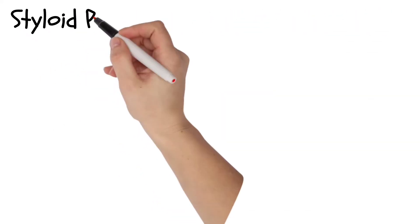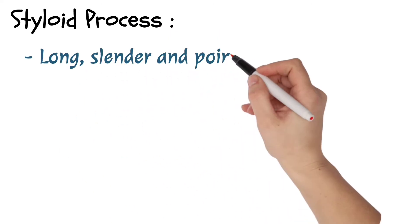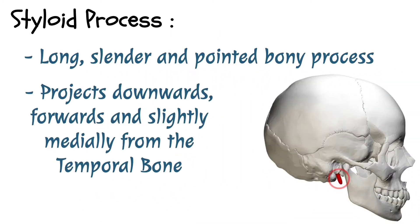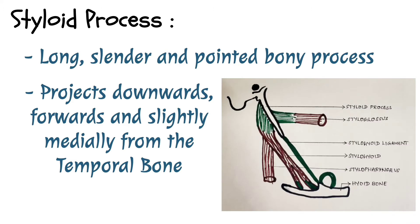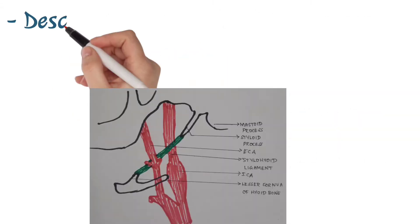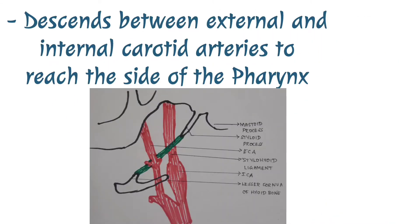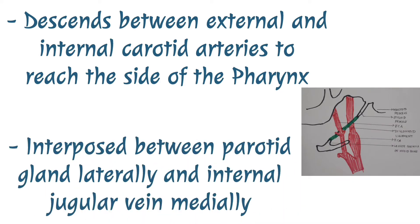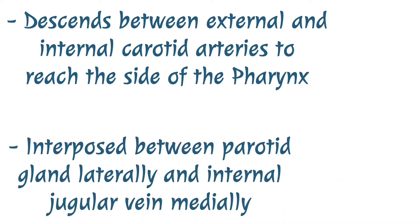Styloid process. The styloid process is a long, slender, and pointed bony process. It projects downwards, forwards, and slightly medially from the temporal bone. It descends between the external and the internal carotid arteries to reach the side of the pharynx. It is interposed between the parotid gland laterally and the internal jugular vein medially.